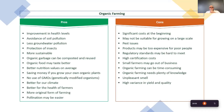On the cons side: significant cost at the beginning. We talked about the cost of certification. As you're becoming certified, you can't sell as certified organic, so the price you receive is lower. Yield will also be less because you're not using synthetic fertilizers — you're using organic fertilizers, predominantly manures and organic meals — so you don't have as much fertility as you would with a synthetic fertilizer. Yield can therefore be less.